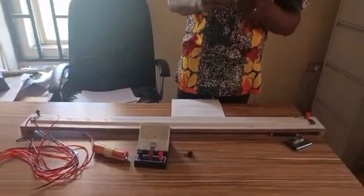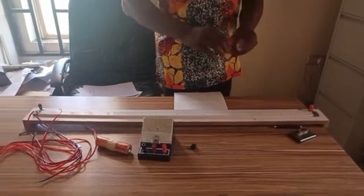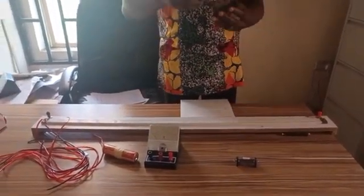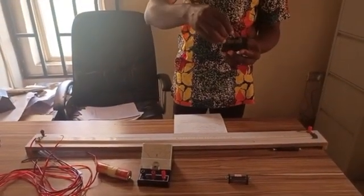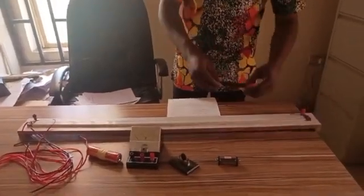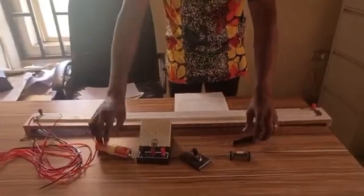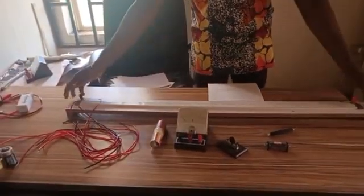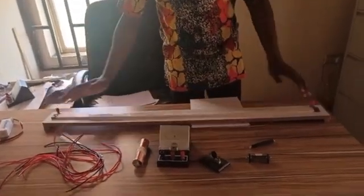We have the standard resistor, this is a 2 ohm resistor. We have a key - when you take off this, the key is open and then when you take it back, the key is closed. Then we have our jockey, we have a pair of battery, a 3 volt battery, and then our potentiometer device.